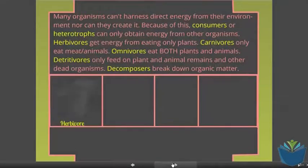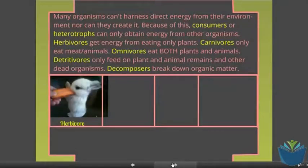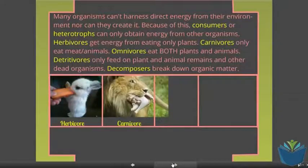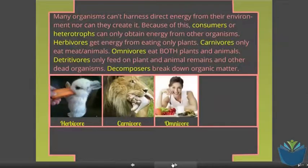First one of those is a herbivore and herbivores simply eat plants, like a rabbit eating a carrot. A carnivore only eats other animals, like a lion. Omnivores can eat both plants and animals, like humans.